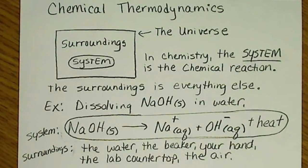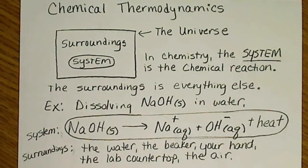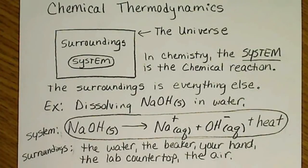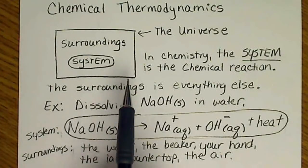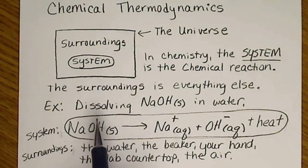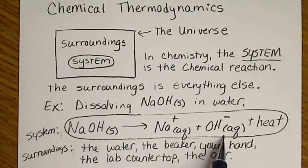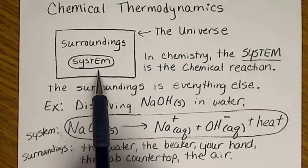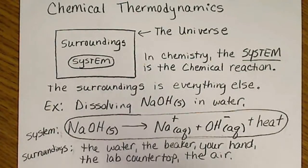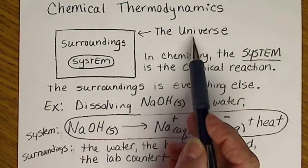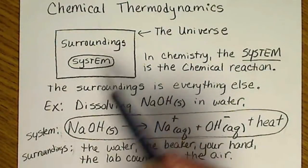As we begin our study on chemical thermodynamics, we're going to look at the three laws of thermodynamics eventually. In order to do that, we need to define what we're talking about. In chemistry, we're going to be looking at a chemical reaction. The reaction itself is the system. The surroundings constitute everything else, and the universe is the system plus the surroundings.